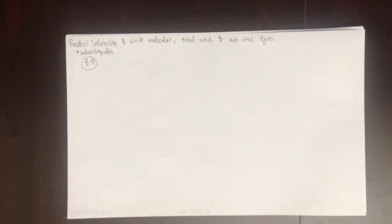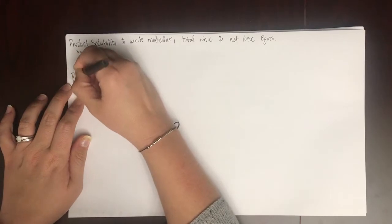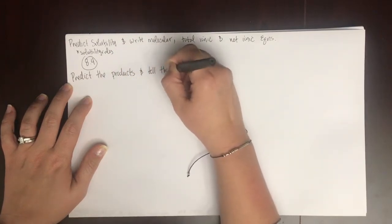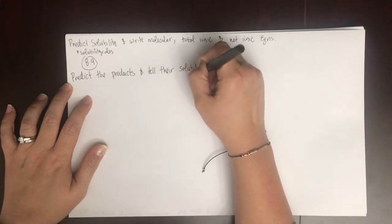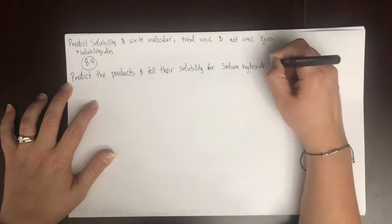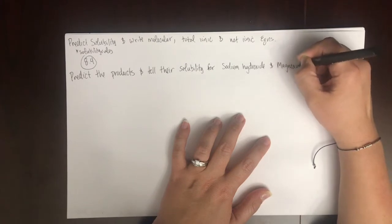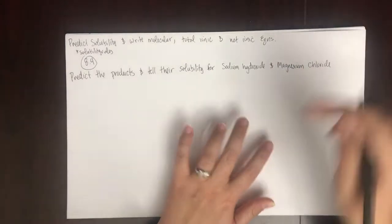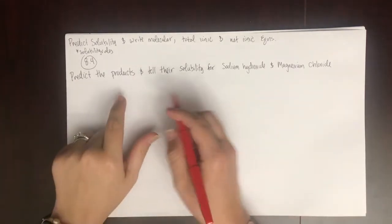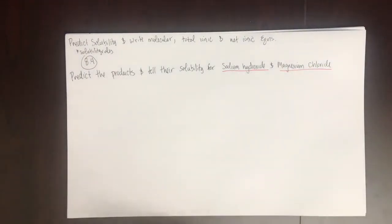Here is an example problem: predict the products and tell their solubility for the reaction of sodium hydroxide and magnesium chloride. The first thing we need to do is write the reaction from the sentence. These are the reactants — sodium hydroxide and magnesium chloride — and we're going to predict the products.